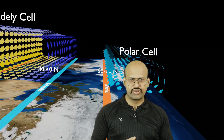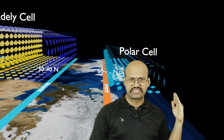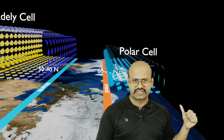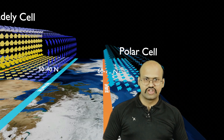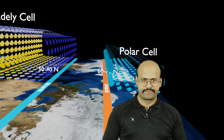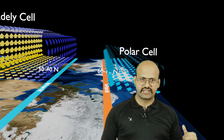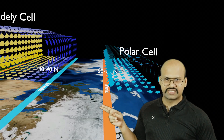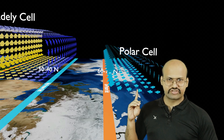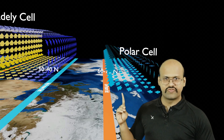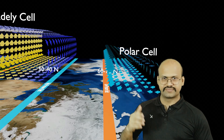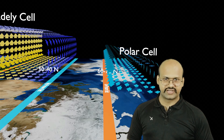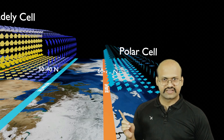Looking at the polar cell, it moves from a high pressure region toward a low pressure region. This high pressure region is created because of the cold atmosphere at the poles — even if the Earth stopped rotating, this high pressure would still exist. However, the low pressure belt at around 60 degrees is created because of the Coriolis force, which does not allow the air to move further, causing it to rise there. This belt is therefore dynamically created by the Earth's rotation — if there were no rotation, this belt would not exist.